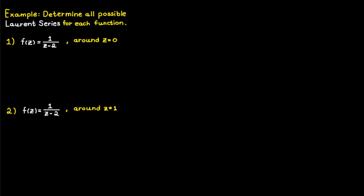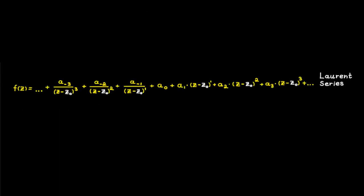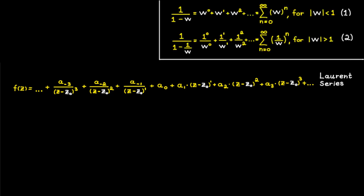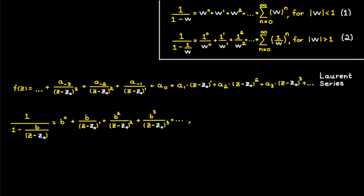Let's continue by doing some examples. We can determine all possible Laurent series using geometric series, because the Laurent series for function f around some point c-naught looks like a sum involving powers of c minus c-naught. We can get exactly that using two geometric series. Notably, the second geometric series is a special case of the first — inserting 1/w into the first series gives the second. For a constant b, inserting b divided by (c minus c-naught) as 1/w in the second series gives an expansion valid when the absolute value of b is smaller than the absolute value of c minus c-naught.